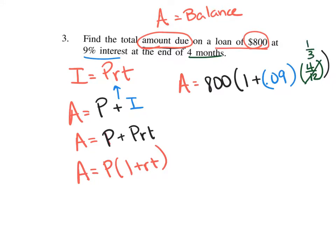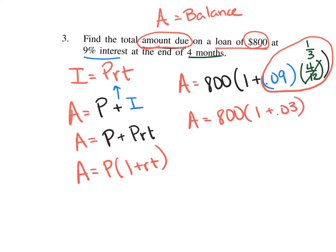I'm going to type this into a calculator now. We're going to calculate this part of the equation first — 0.09 times one third, which equals 0.03. Then I get 800 times 1 plus 0.03, and adding that to 1 gives 1.03. So A equals 800 times 1.03.